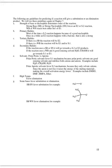For substitution reactions, there are some guidelines you need to know. The strength of the base or nucleophile determines the order of the reaction. A strong base or strong nucleophile means E2 or SN2. A weak base or weak nucleophile means SN1 or E1.